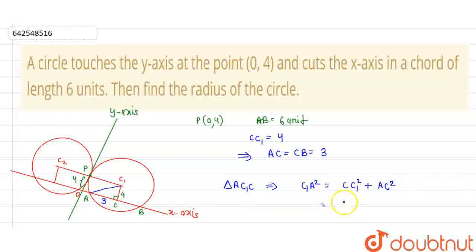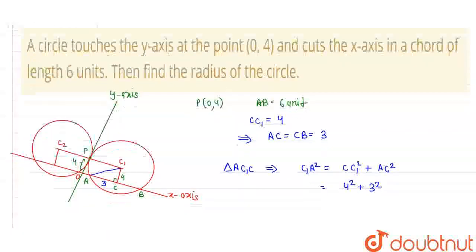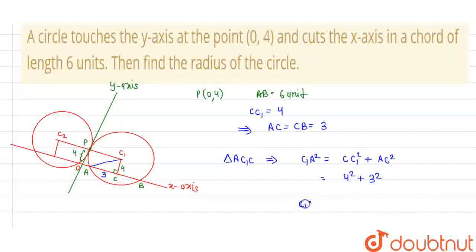C1A squared equals CC1 squared plus AC squared. So, CC1 is given to us as 4 squared plus 3 squared. So, here, C1A, this is also equal to radius, this is equal to 4 squared plus 3 squared, whole root. This will come as 5. So, the radius of this circle is 5. Now, radius of this other circle, that is, C2 circle is also 5 because they are the mirror image of each other. So, we found the radius is 5 units. Thank you.